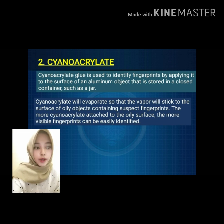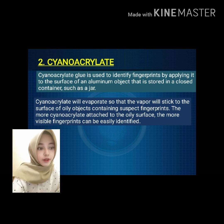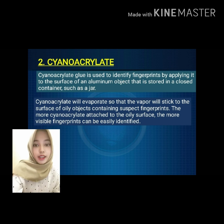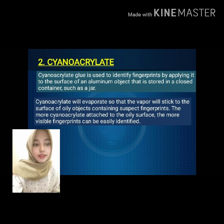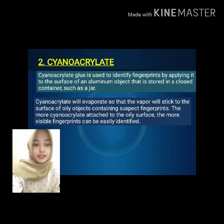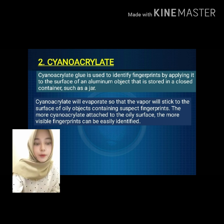Fingerprints that cannot be seen directly with the naked eye are called latent fingerprints. To make them visible, experts usually use chemicals such as cyanoacrylate glue, iodine, silver chloride, and ninhydrin. Cyanoacrylate glue is used to identify fingerprints by applying it to the surface of an aluminum object stored in a closed container such as a jar. The jar also contains the surface of objects with fingerprints that have been smeared with oil. Cyanoacrylate will evaporate so that the vapor sticks to the surface of oily objects containing suspect fingerprints. The more cyanoacrylate attached to the oily surface, the more visible the fingerprints can be and the more easily identified.